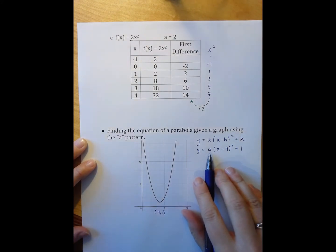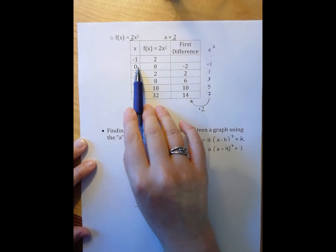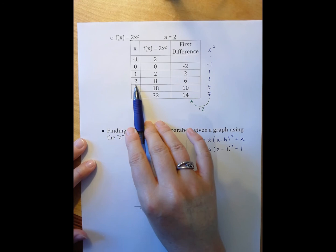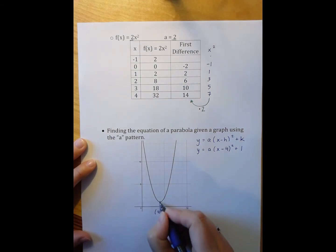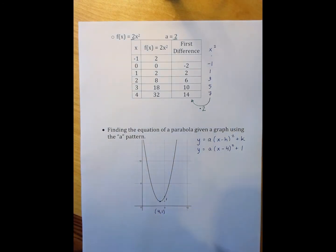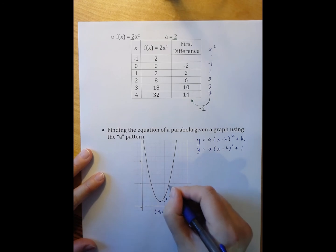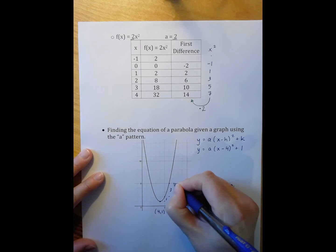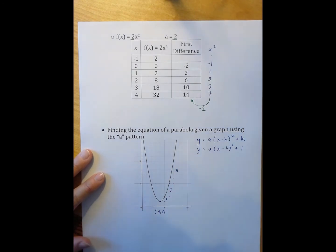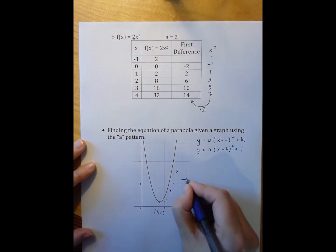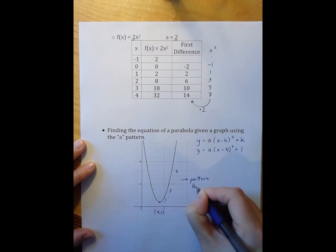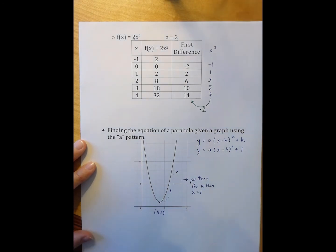And now I need to find my a pattern. So, my a pattern is all about what's changing, that sort of rough way of saying sort of slope from each time I increase by 1 on my x's. So, when I go over 1 on my x's, I go up 1 on my y's. When I go over 1 on this x, I go up 1, 2, 3 on my y's. Over 1, up 1, 2, 3, 4, 5 on my y's. So, I'm getting the pattern 1, 3, 5, 7, etc. That is the pattern for when a is 1. Which means I now know my a value.